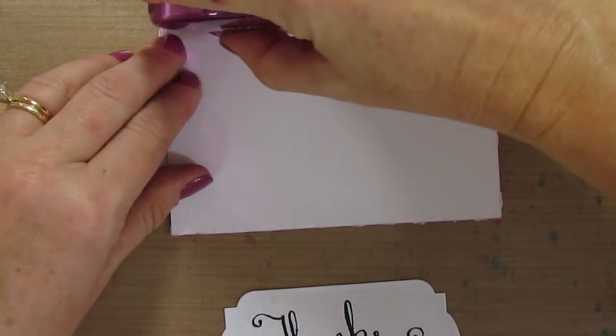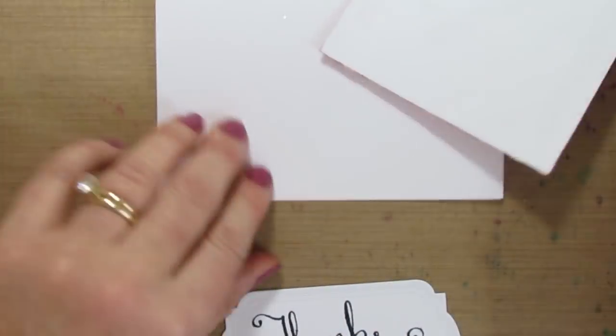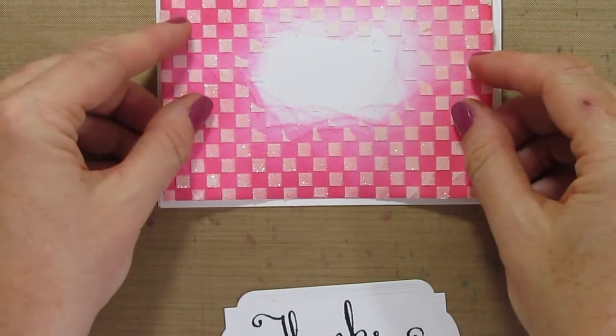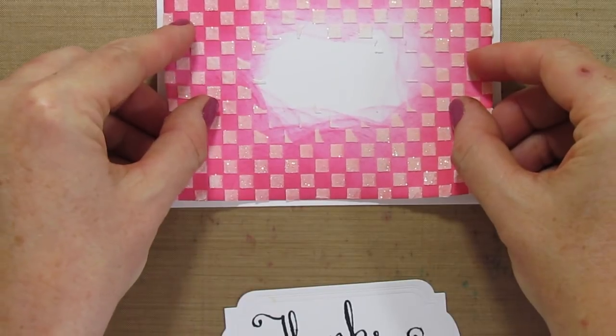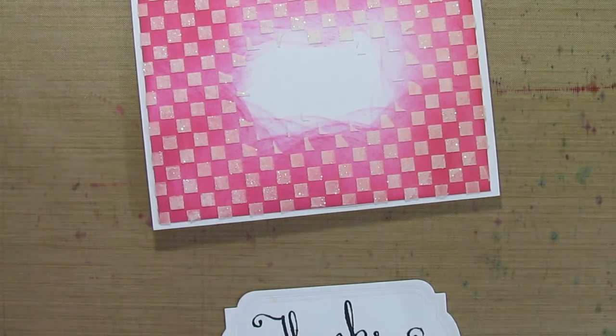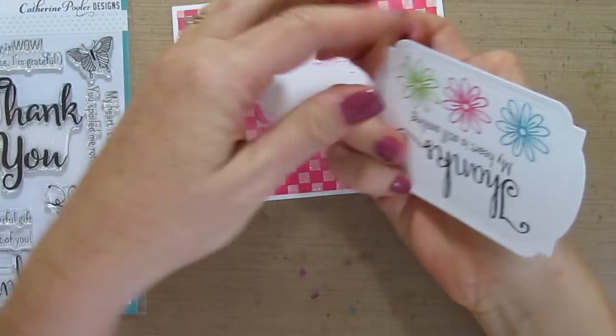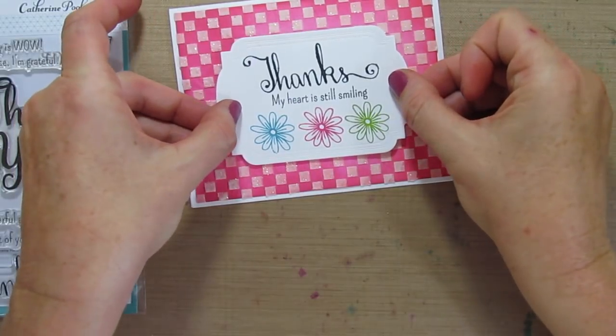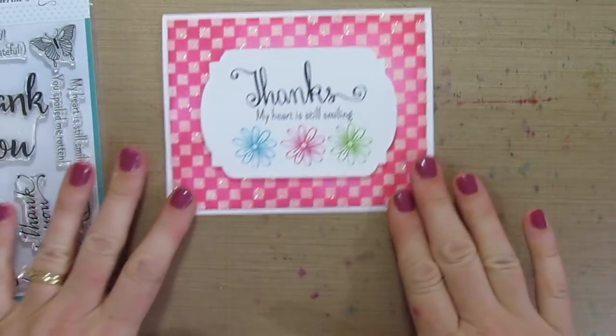And now we'll assemble, just adding a little adhesive to the back of my technique piece, adding it to the card front, and then I think this label needs to be popped up. So I'm going to grab my giant roll of 3M mounting tape and add that label. That'll go right in the center, and that's it.